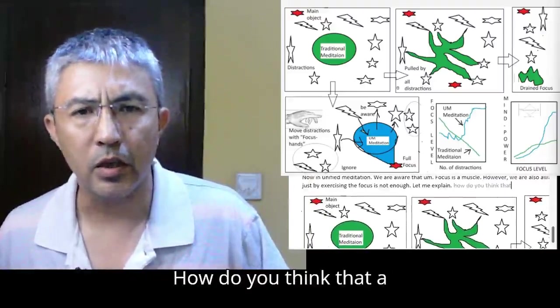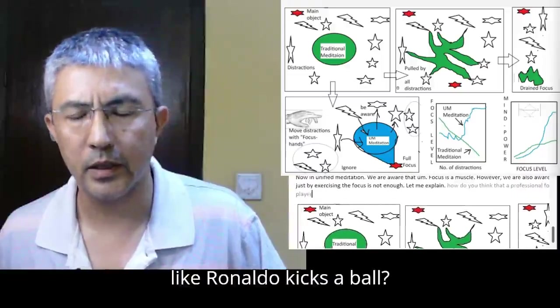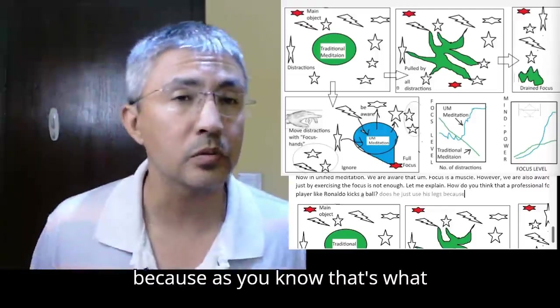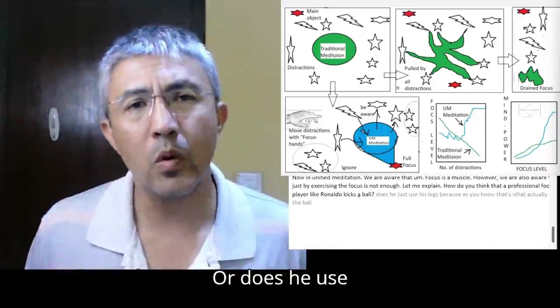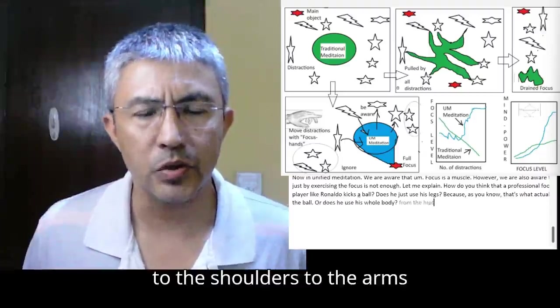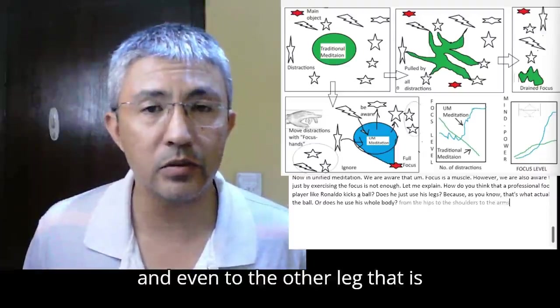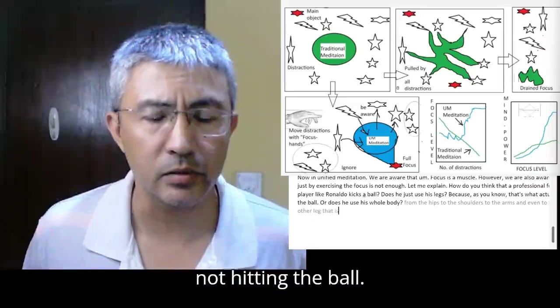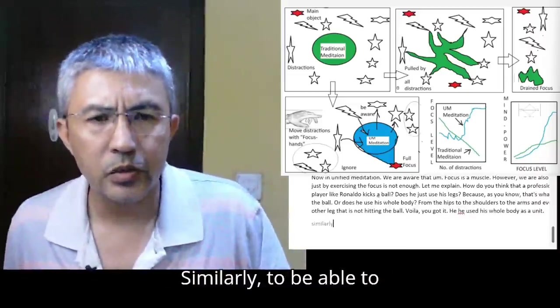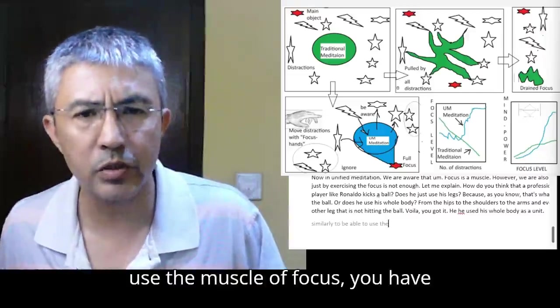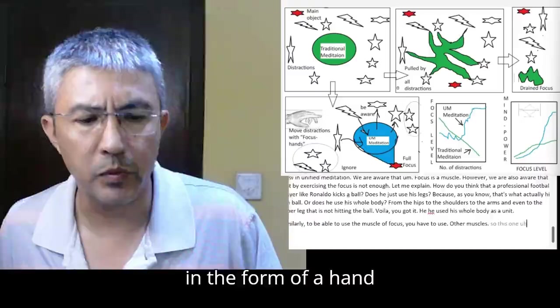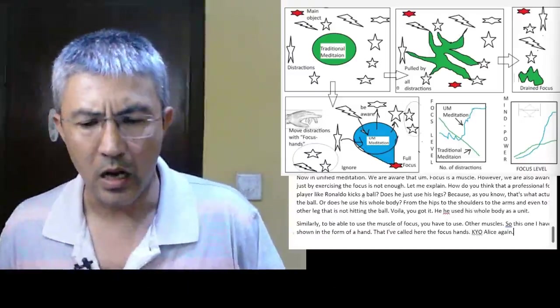How do you think that a professional football player like Ronaldo kicks a ball? Does he just use his legs because that's what actually hits the ball? Or does he use his whole body from the hips to the shoulders to the arms and even to the other leg? He used his whole body as a unit.